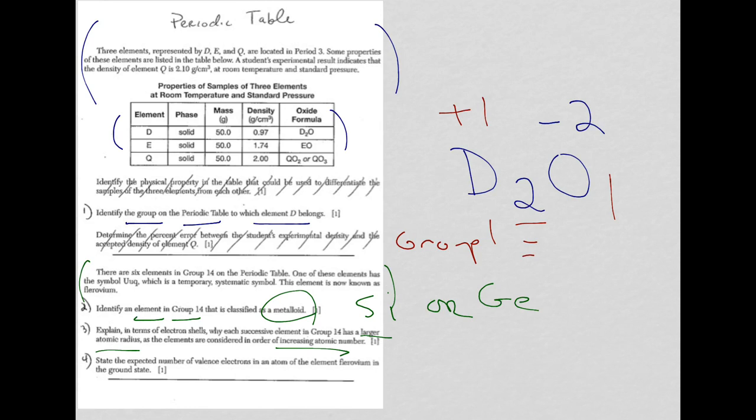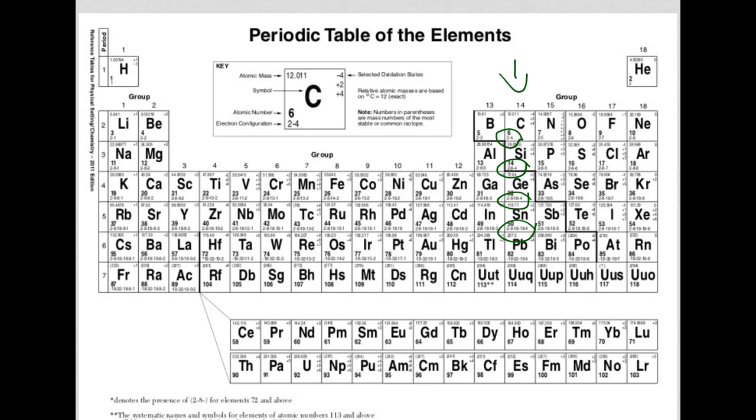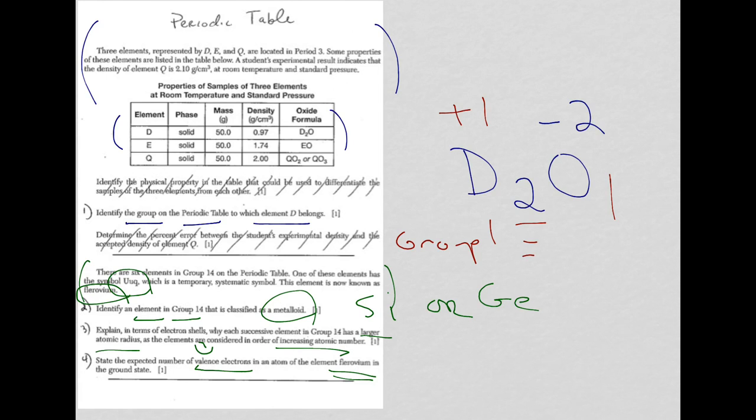Let's move on to question 4. State the expected number of valence electrons in an atom of this element in the ground state. If I go back, the wording here is given for this element Uuq. And valence electrons, you need to know the definition as the outermost electrons. So I already have the electron configurations circled. The last number is the valence electrons, the outermost electrons. And let's throw lead in the mix too. So for Uuq, it would also be 4 valence electrons. So that's my answer for question 4.